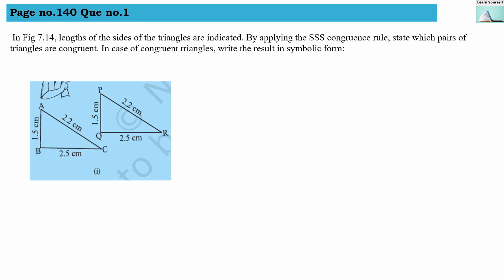Welcome to Learn Yourself. Try this sum: page number 140, question number 1. In figure 7.14, lengths of sides of triangles are indicated. By applying the SSS congruence rule, state which pair of triangles are congruent. In case of congruent triangles, write the result in symbolic form. SSS stands for Side-Side-Side. We have to check whether three congruent sides are present in this first numerical.